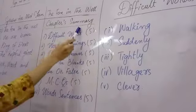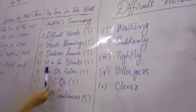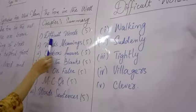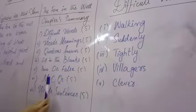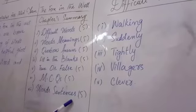Then chapter summary. In chapter summary, what are the difficult words? Words meaning 5, question answer 5, fill in the blanks 5, true or false 5, MCQs 5, mixed word sentences 5.